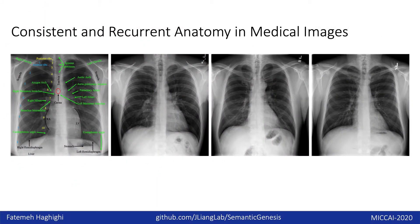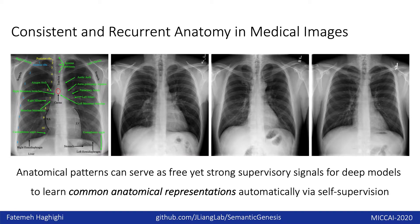Medical imaging protocols typically focus on particular body parts for specific clinical purposes. This results in images of similar anatomy across different patients. For example, chest X-ray images all look similar. So, given an annotated image, the same anatomical patterns can be found in other image samples as well. These consistent and recurrent anatomical patterns carry rich semantic knowledge about the human body, so they can serve as a free yet strong supervisory signal for deep models to learn common anatomical representations via self-supervised learning.